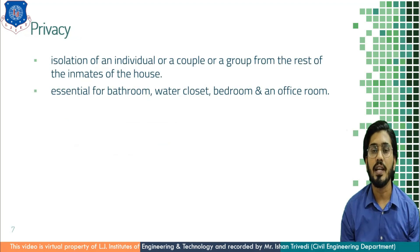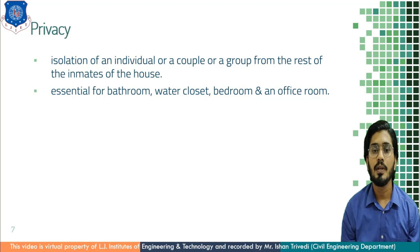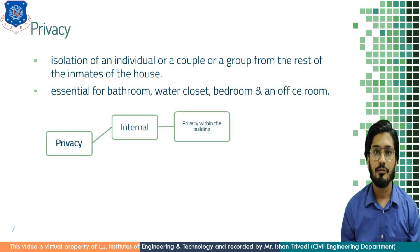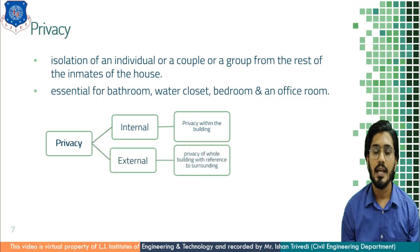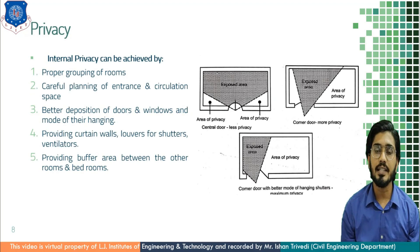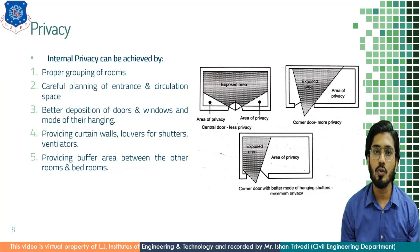Next is Privacy. Privacy is isolation of an individual, a couple, or a group from the rest of the inmates living in the house. It is essential for bathroom, water closet, and bedroom for sight purposes, whereas for office room and study room, it is restricted by sight and noise as well. Privacy can be achieved by two ways: first is internal privacy, which is the privacy within the building itself; and second is external privacy, which is the privacy of a whole building with reference to surrounding buildings. The first method of internal privacy is arranging rooms in proper grouping — for example, providing internal access to the bathroom from the bedroom, which is called a master bedroom.